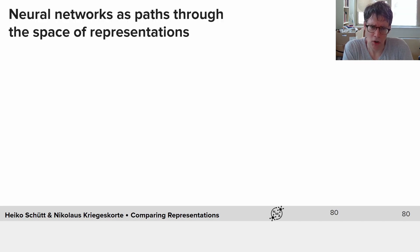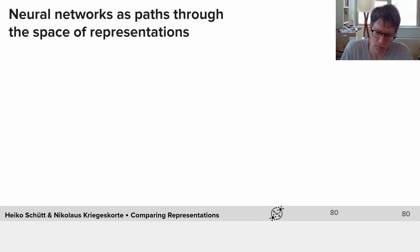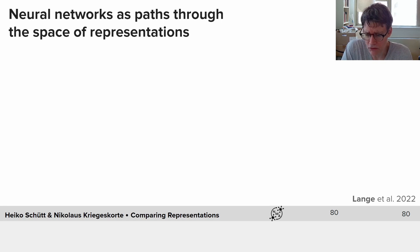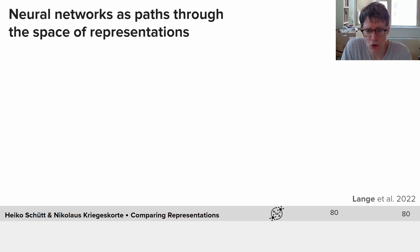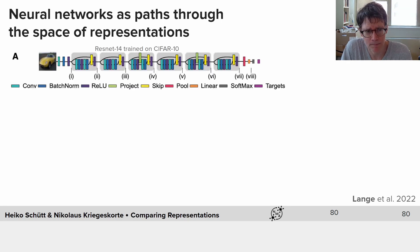One key idea in this tutorial is neural networks as paths through the space of representations — the title of a very interesting paper by Richard Lang. We'll look at an example from that paper to motivate what you'll be doing in this tutorial in a simpler way.